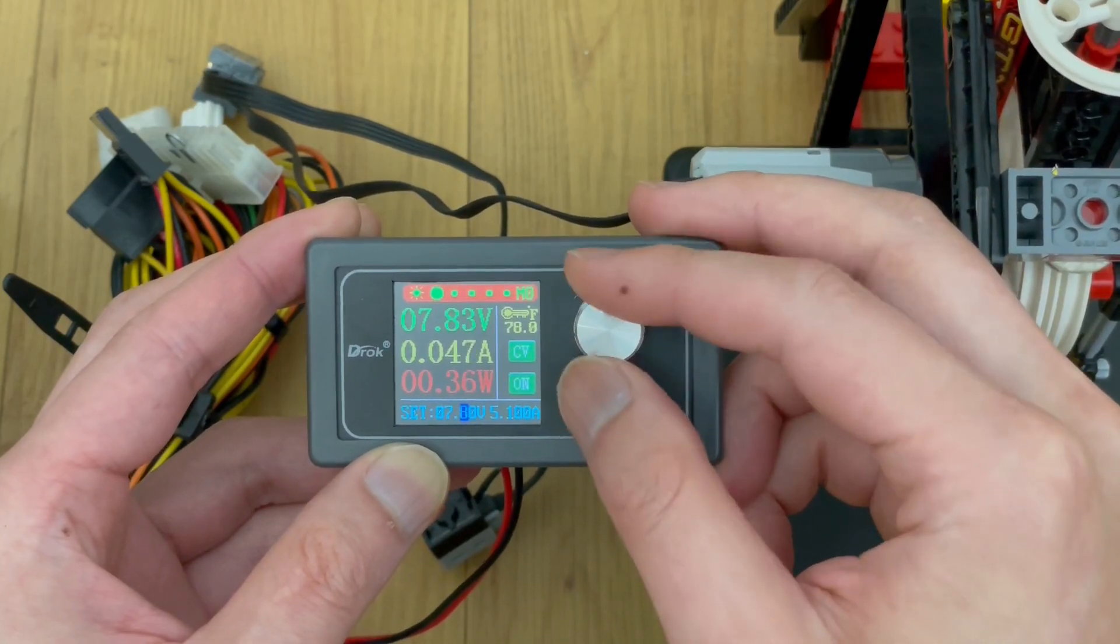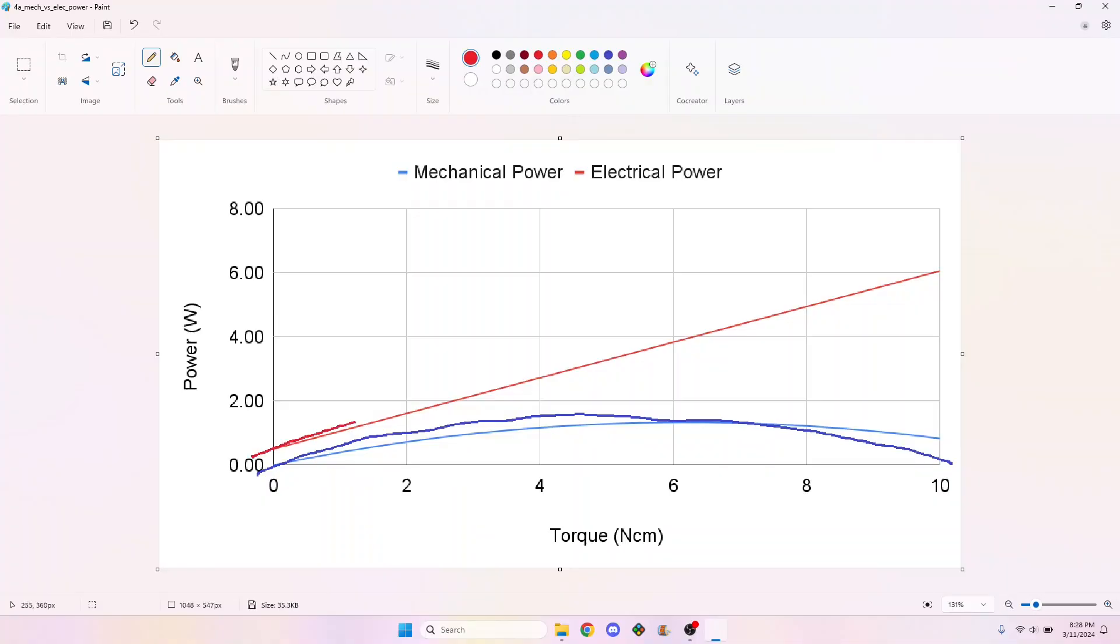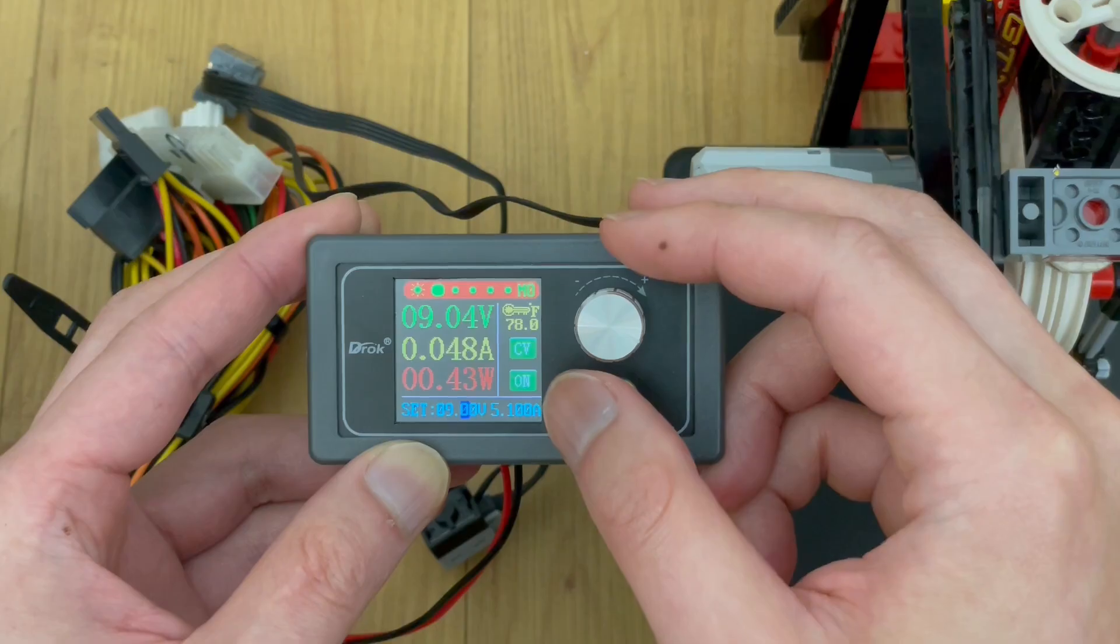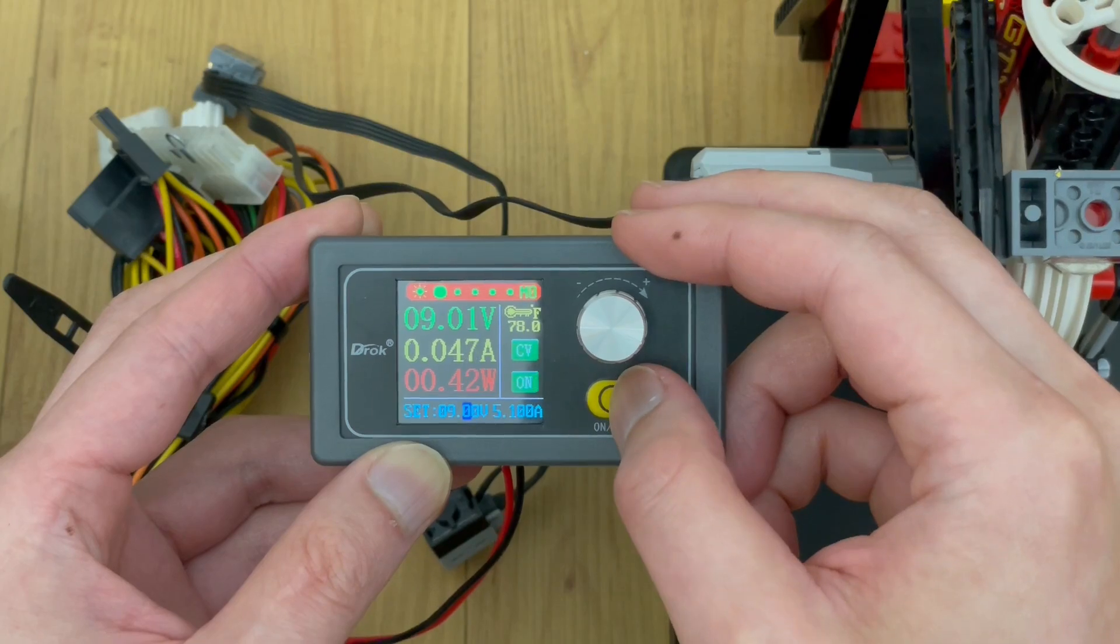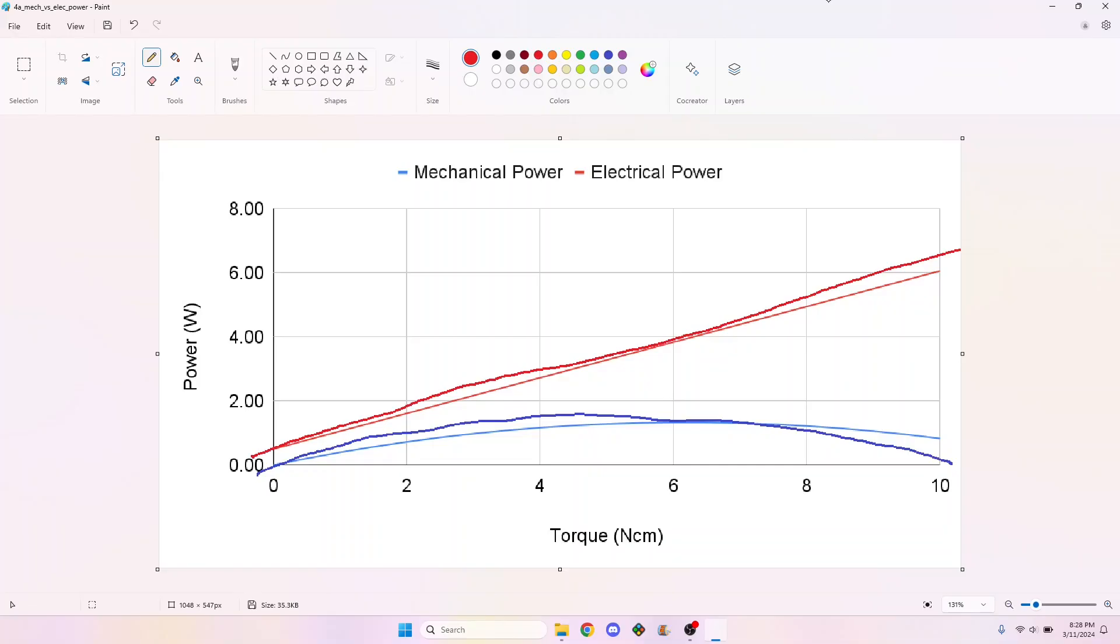This forms a straight line because current increases linearly with torque at a constant voltage. Efficiency peaks where the percent difference between the mechanical and electrical power curve is the smallest, typically in the first third of the torque range.